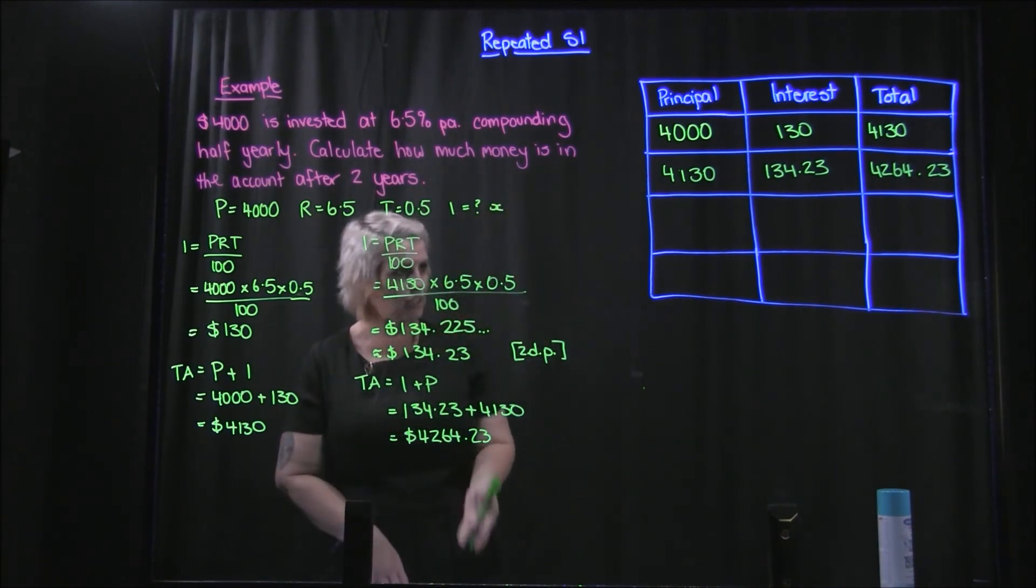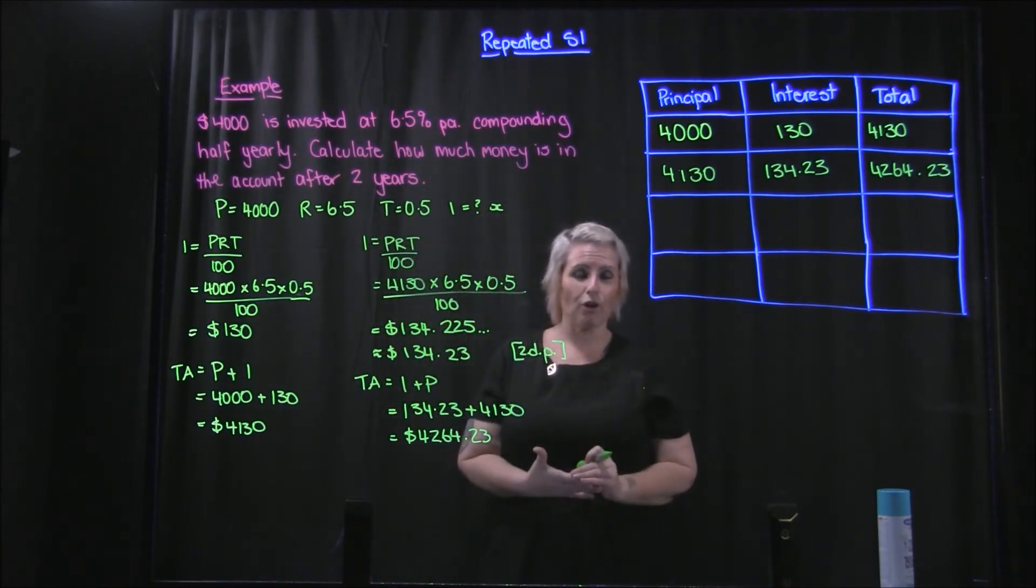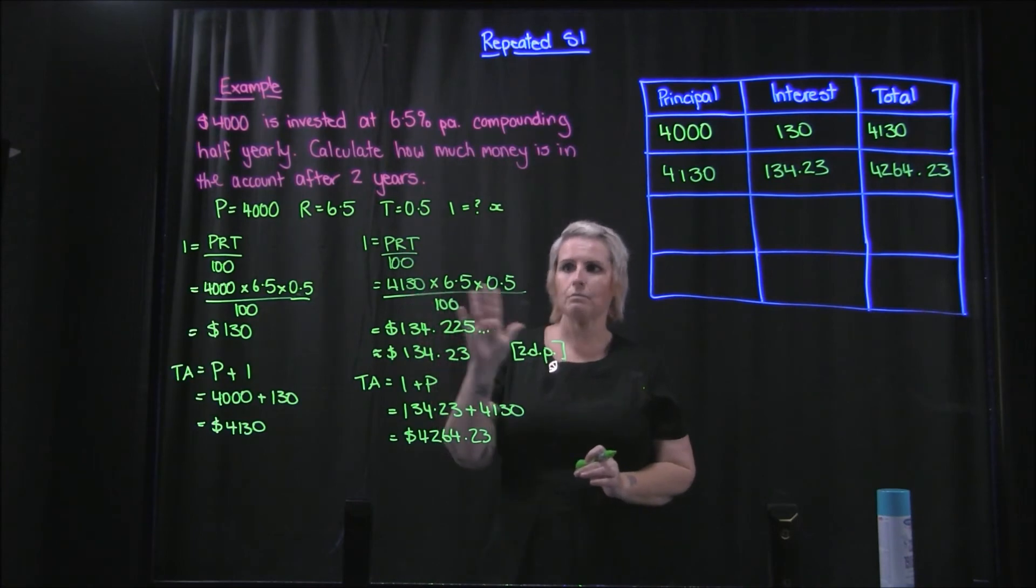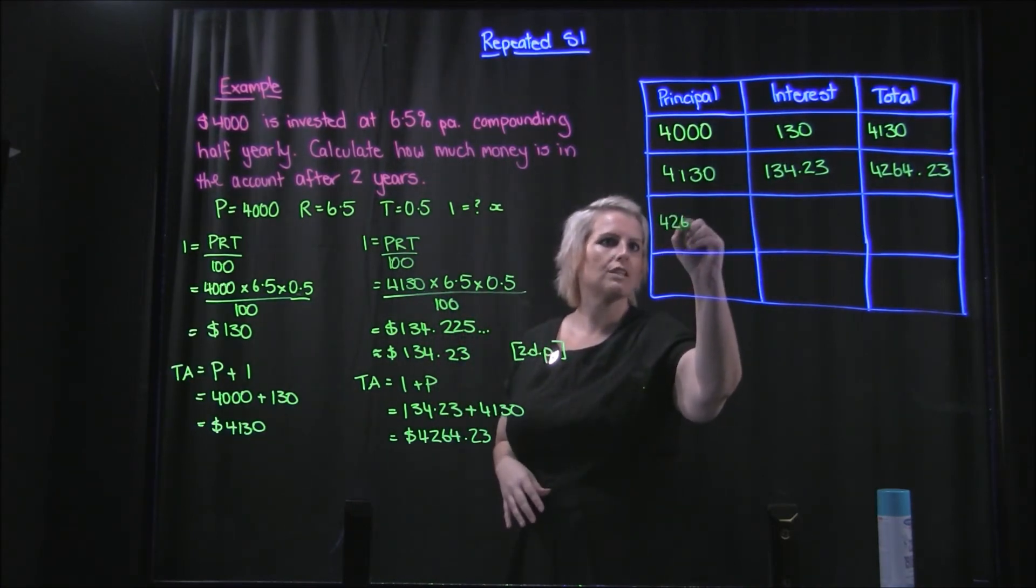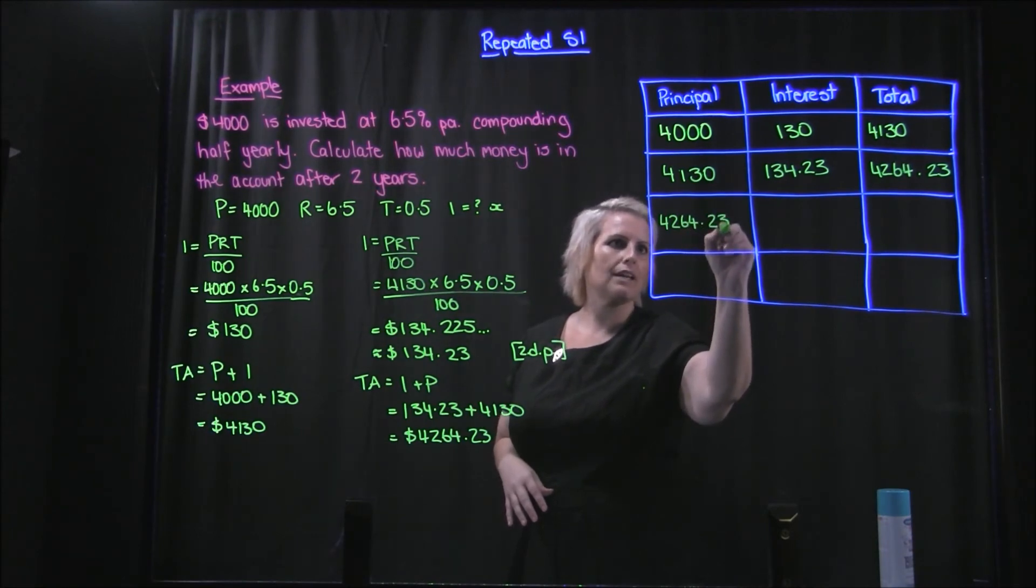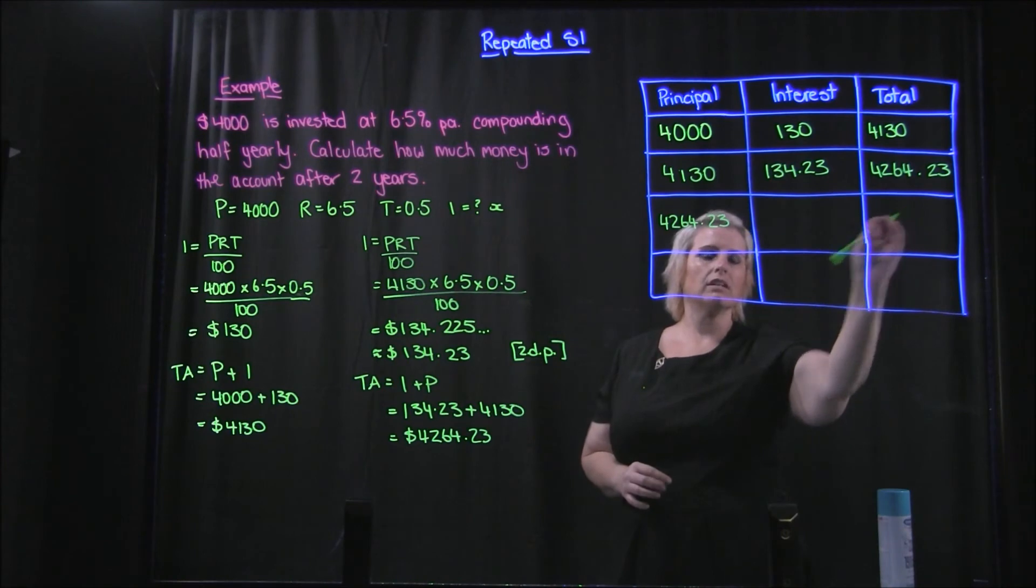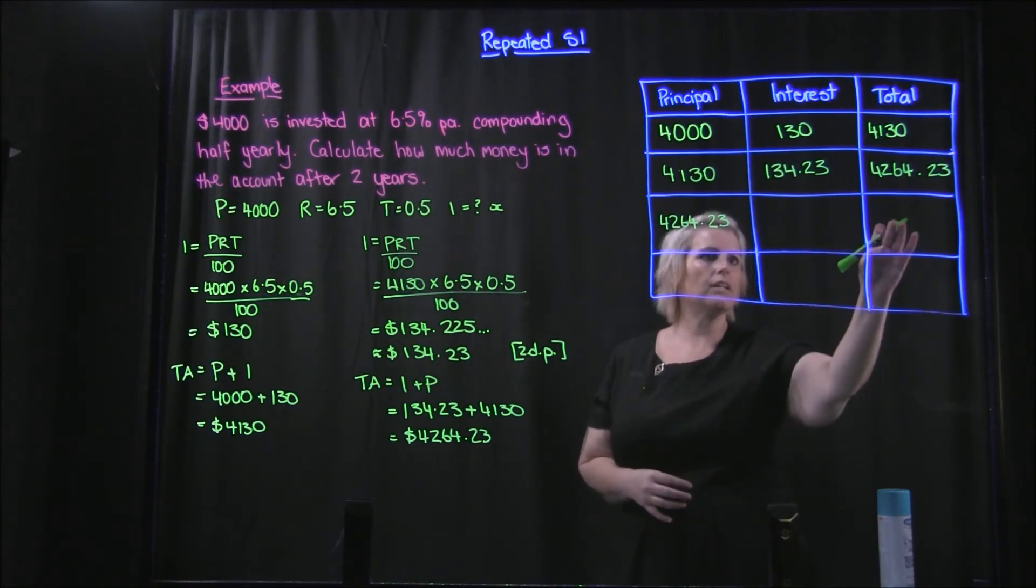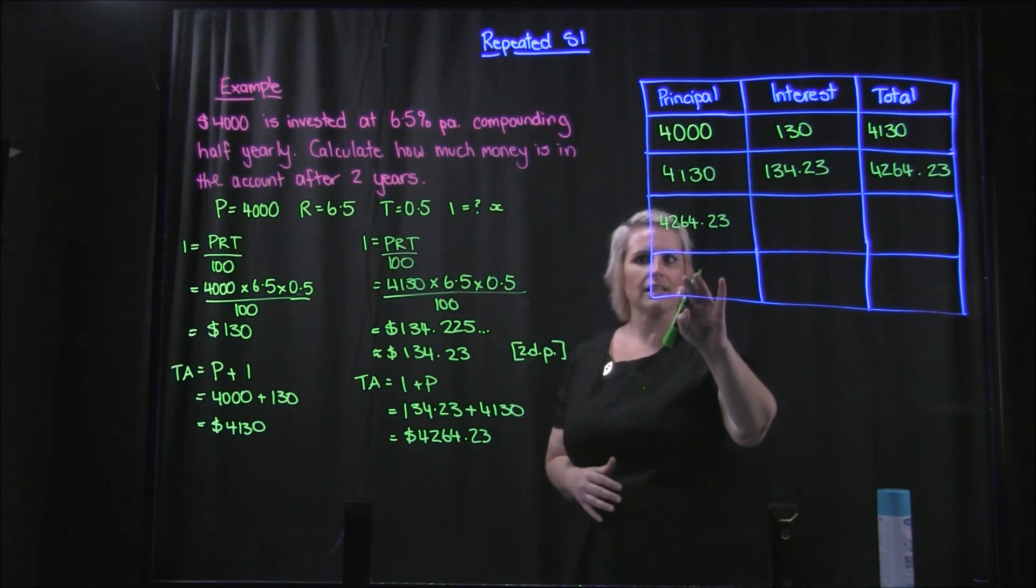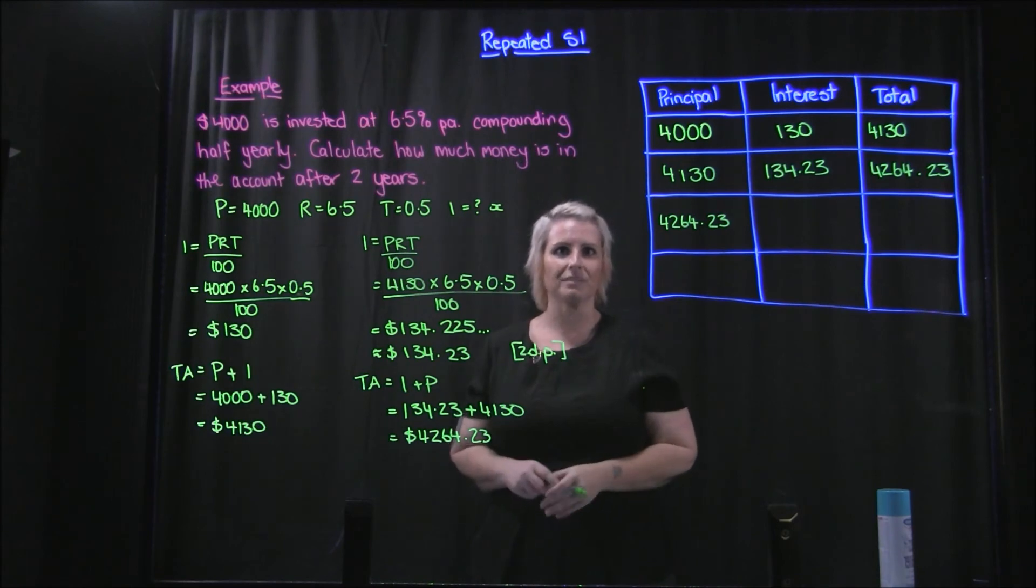Now the next two, I want you to kind of work through. So if you can pause the video, do the same lot of working out. So this one will transfer down to here: $4264.23. And you're going to work out the interest and then the total amount after another six month compounding period. Then you'll transfer that down to here and again do the calculations. So pause now, do that, and then I'll write the answers up.